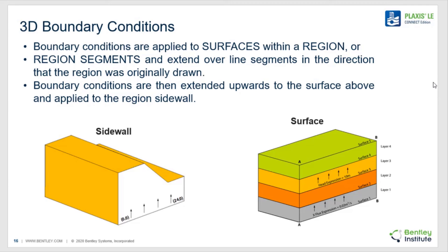3D boundary conditions can be applied on surfaces or sidewalls of three-dimensional numerical models. If boundary conditions are applied to the bottom line segment of a layer, then they can be automatically extruded upwards to the next layer, as shown in the figures. It should also be noted that specialty boundary conditions such as tunnels can be applied to 3D polylines within a numerical model. Wells are specialty boundary conditions that can be applied to vertical wells in a numerical model, as shown in the figures.